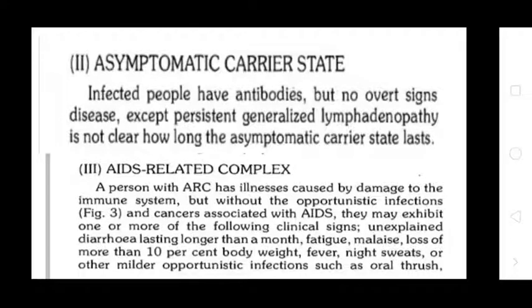Asymptomatic carrier state: Infected people have antibodies but no overt signs of disease, except possibly persistent generalized lymphadenopathy. It is not clear how long the asymptomatic carrier state lasts. AIDS-Related Complex (ARC): A person with ARC has illness caused by damage to the immune system, but without the full opportunistic infections and cancers associated with AIDS. They may exhibit one or more of the following: unexplained diarrhea lasting longer than a month, fatigue, malaise, loss of more than 10% of body weight, fever, night sweats, or other mild opportunistic infections such as oral thrush.